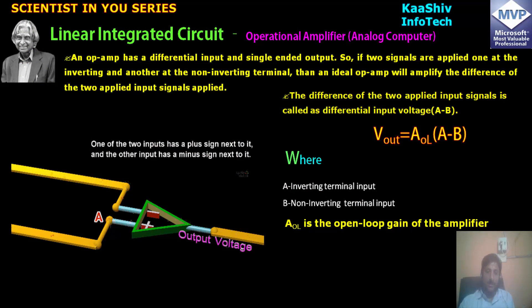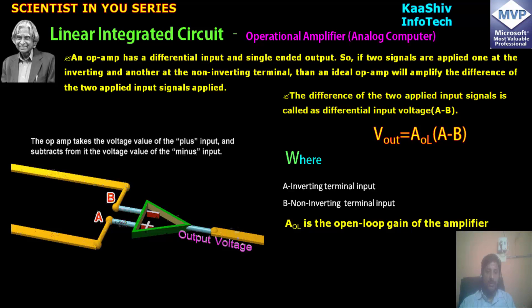Further moving to discuss about the operational amplifier, you are able to see the positive terminal here and the negative terminal here. The output voltage is nothing but the difference between the positive and the negative terminal.